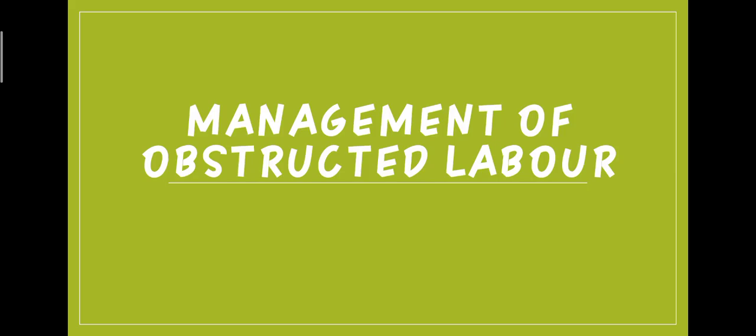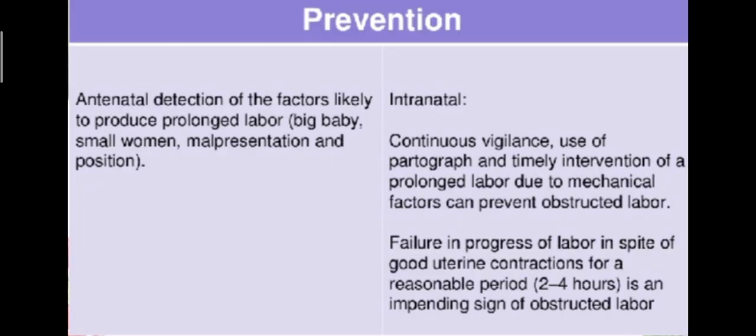Coming to the management of obstructed labour — first, how do we prevent it? During the antenatal period, antenatal detection of factors likely to produce prolonged labour, like big baby, small women, malpresentation, and position. During the intranatal period, continuous vigilance, use of a partograph, and timely intervention of prolonged labour due to mechanical factors can prevent obstructed labour. Failure of progress in labour in spite of good uterine contraction for a reasonable period of about 4 hours is an impending sign of obstructed labour.